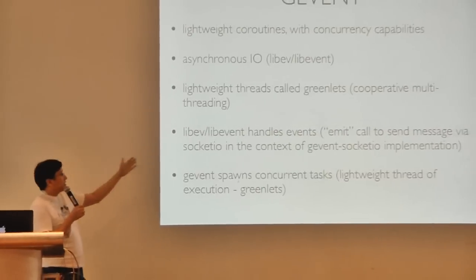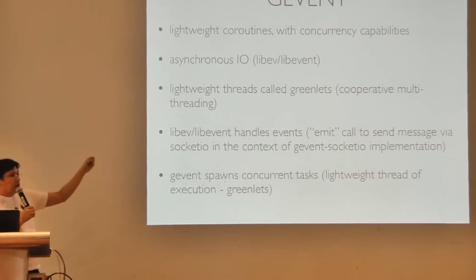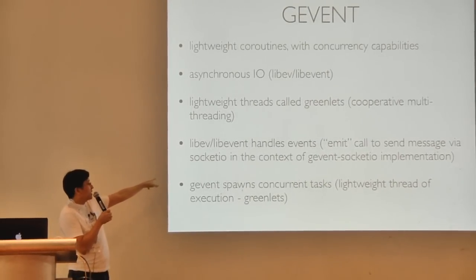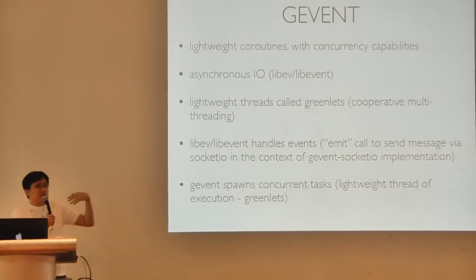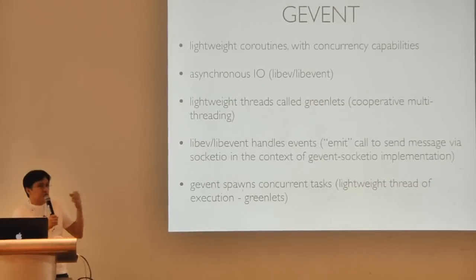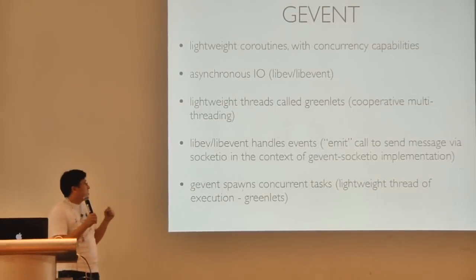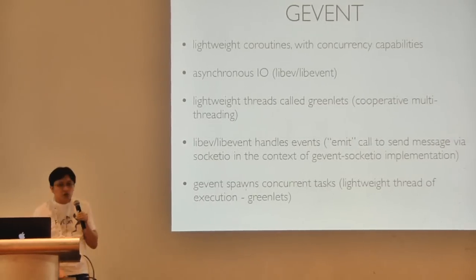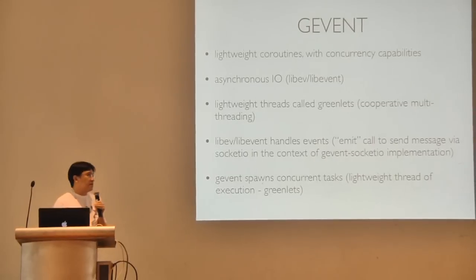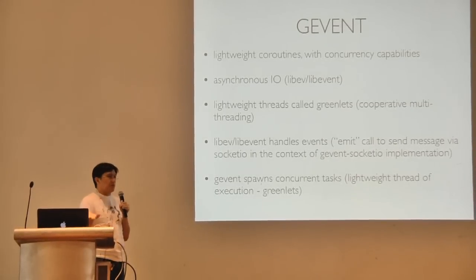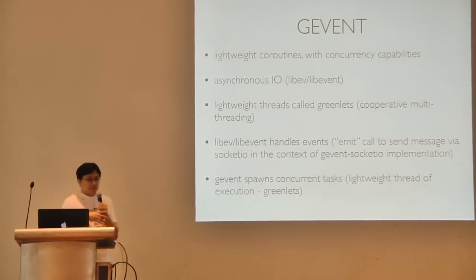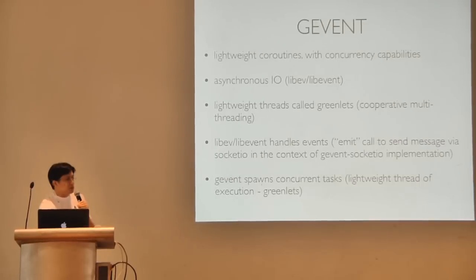What's important about libEV or libEvent is that it's an event handler. In our sample code, you'll see an emit call to send a message via Socket.io, and on the other end there's an on syntax which receives that emission. gEvent spawns a concurrent task — called a greenlet — and the typical syntax used is gevent.spawn. You can import the greenlet itself and micromanage it, but typically in sample code we just spawn it.